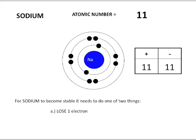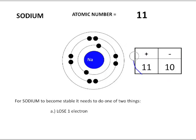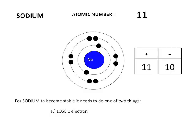Now the count of positives to negatives is no longer the same. We have 10 negatives, which means we have more positives than negatives. We have a total of one extra proton, which means sodium now carries a charge of plus one.